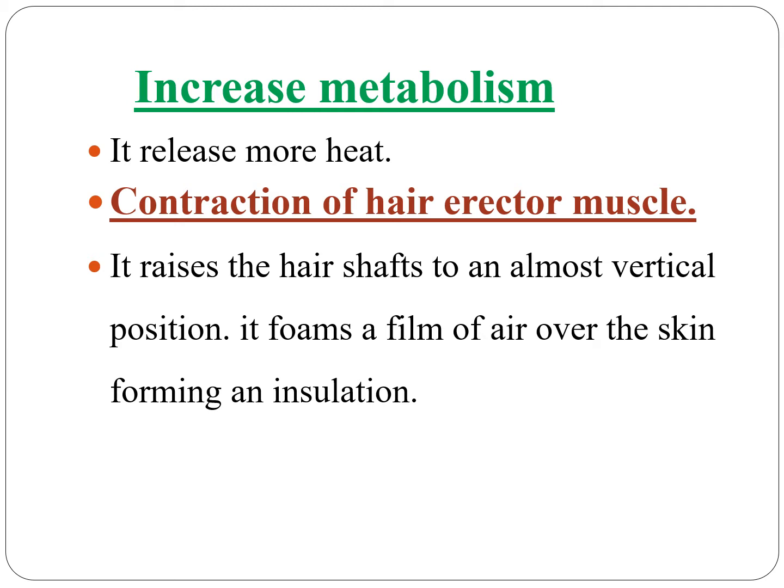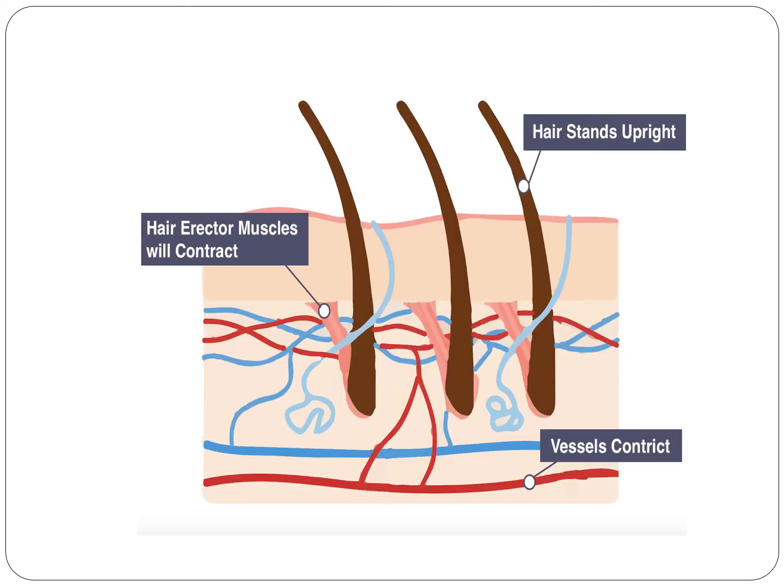Next is increased metabolism, which releases more heat. Next is contraction of hair erector muscles, which raises the hair shaft to an almost vertical position. This forms a film of air over the skin, forming an insulation layer. In this figure, hair erector muscles contract, hair stands upright, and the blood vessels constrict.